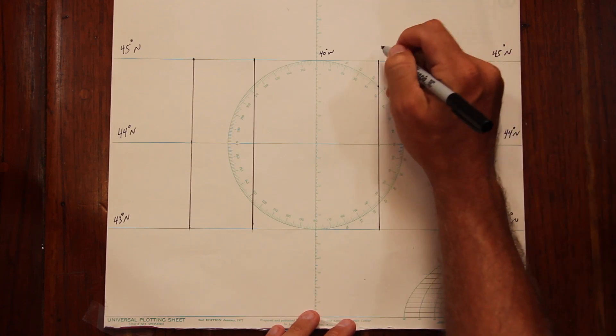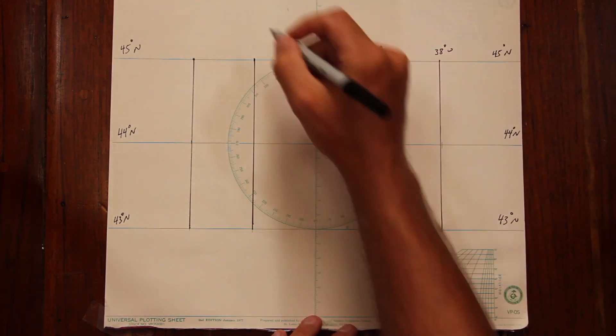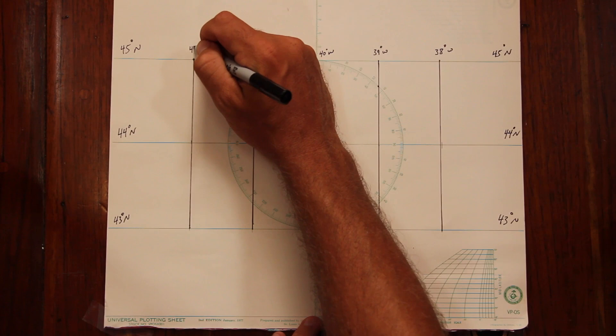Proper labeling is critical on the UPS, so make sure that you label your longitude lines correctly. In this case, our scale is one degree per line.